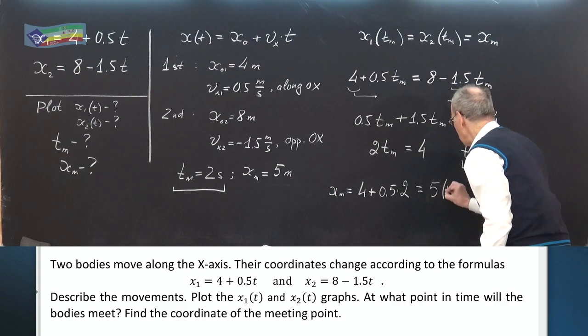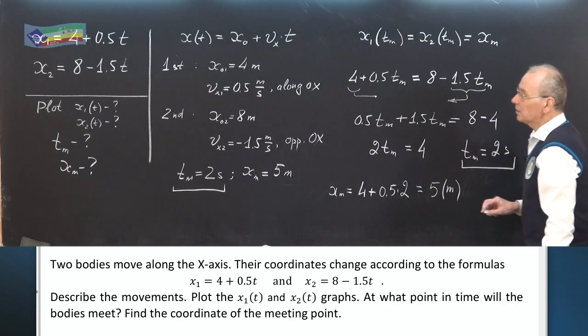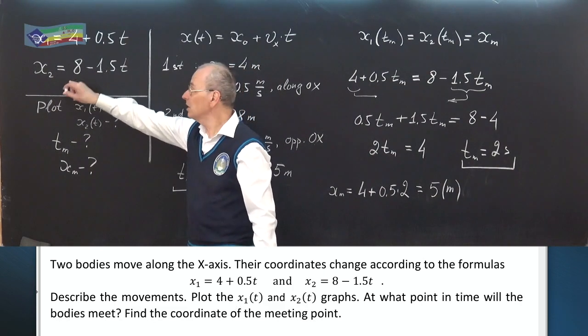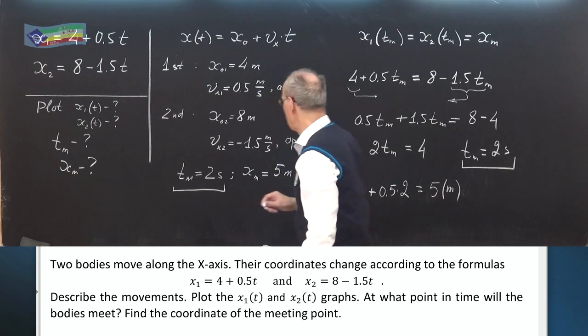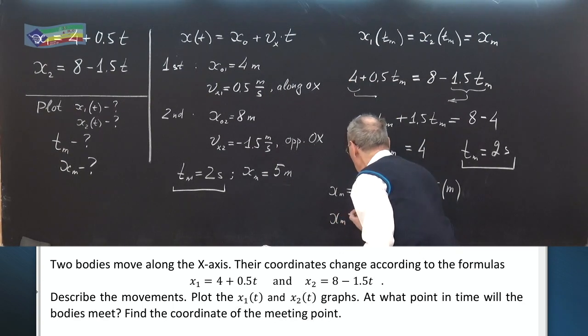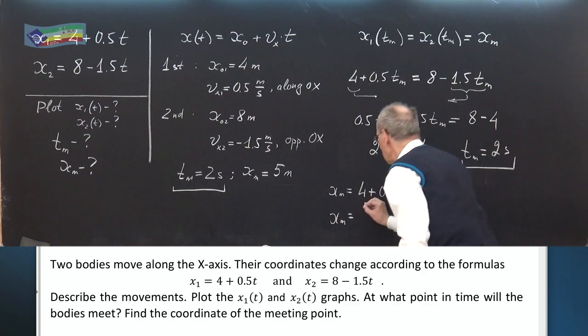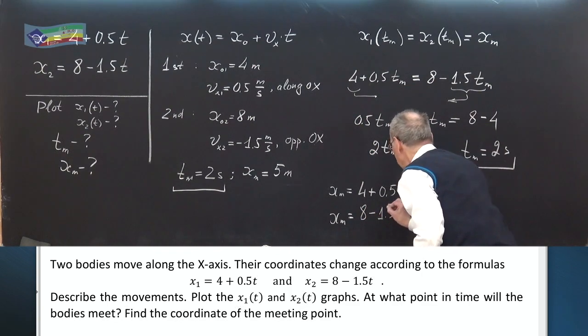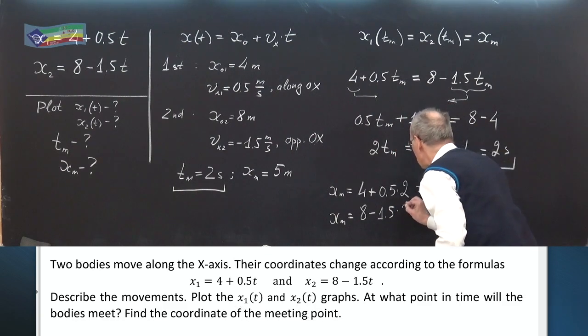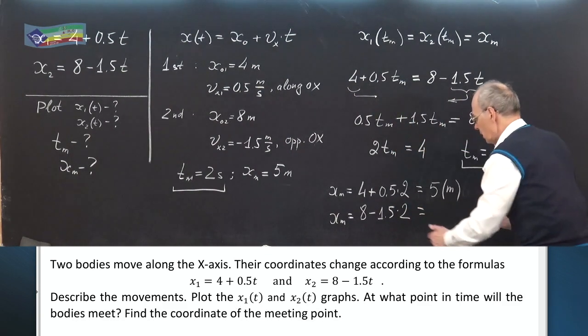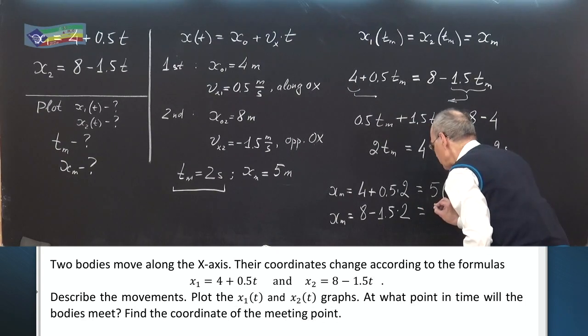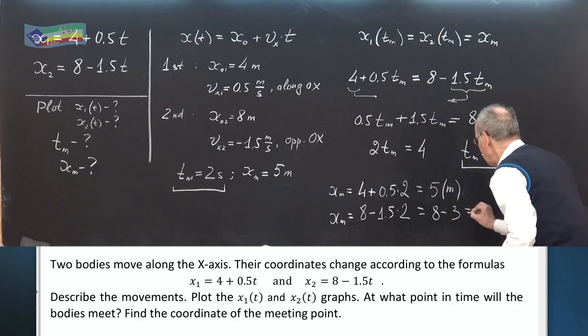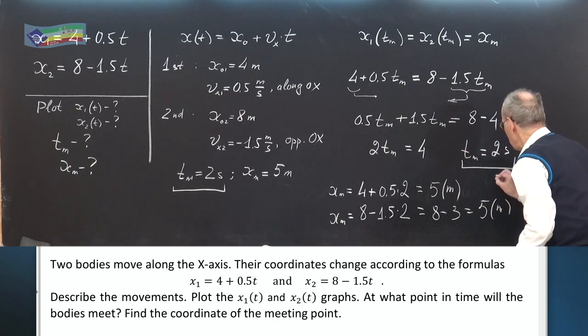And to check ourselves, let's repeat the substitution, but to the second formula. xₘ equals 8 minus 1.5 times 2 gives 8 minus 3 gives the same 5 meters.